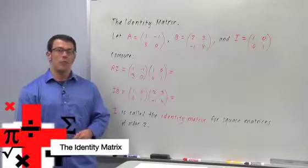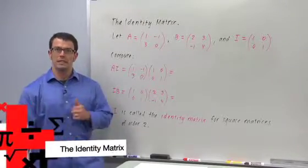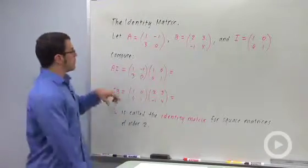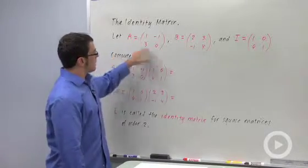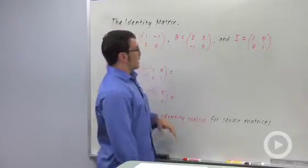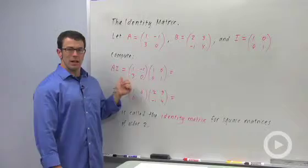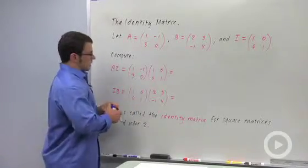We're talking about square matrices, and one really important square matrix is the identity matrix. We'll talk about that in a moment. First let's look at three matrices: A, B, and I. I want to multiply A times I. So let's do that really quickly.